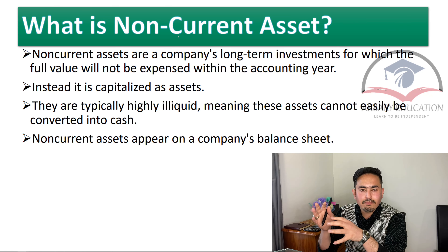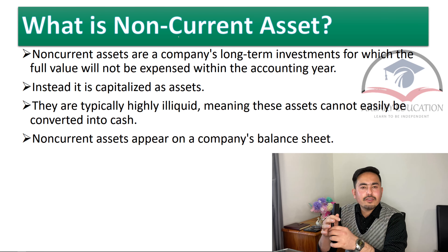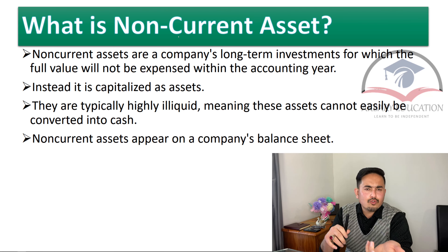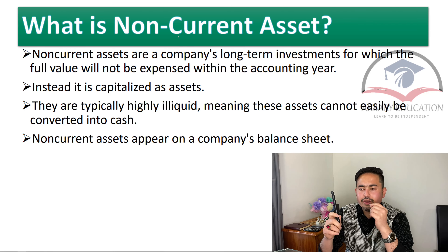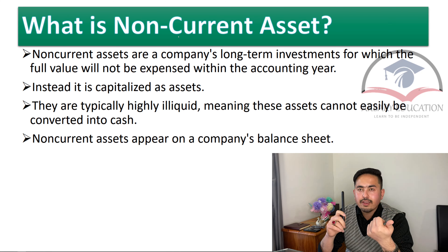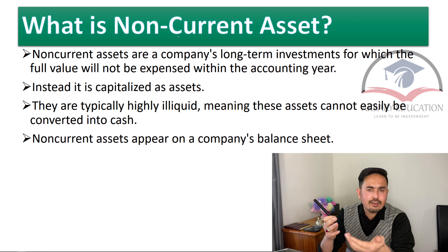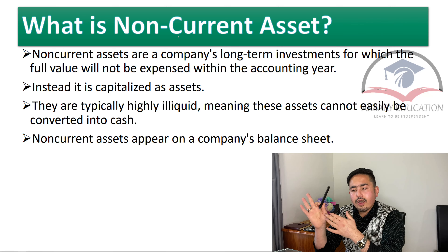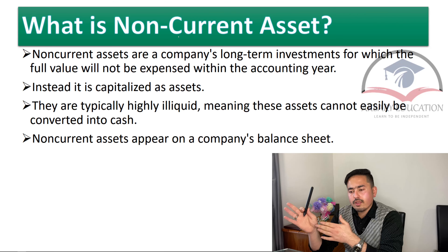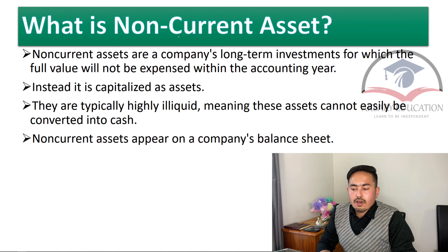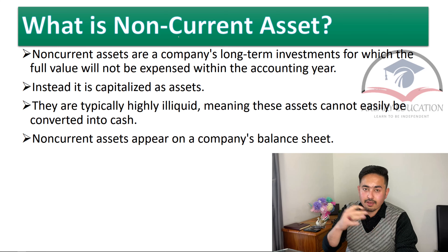To explain illiquidity: suppose you have a building and compare it to a US Treasury bill. Which one is easier to sell or convert to cash? Cash is already cash, but even Treasury bills are much easier to convert in the money market compared to a building, because of the procedures and rules that exist. So non-current assets are more in a condition of illiquidity and it is tougher to convert them to cash than current assets. They appear on a company's balance sheet.